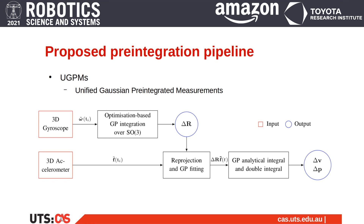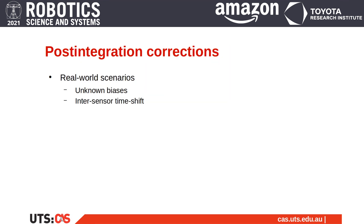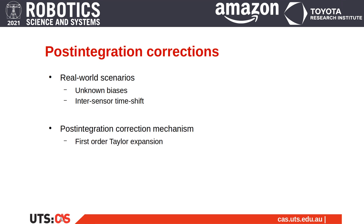In real-world scenarios, IMU data are subject to biases that are generally unknown at the time of pre-integration. This work includes thorough derivation of post-integration bias and time shift correction based on the first-order Taylor expansion. This makes possible the estimation of IMU biases and the inter-sensor time shift when the UGPMs are used in a multimodal estimation framework.